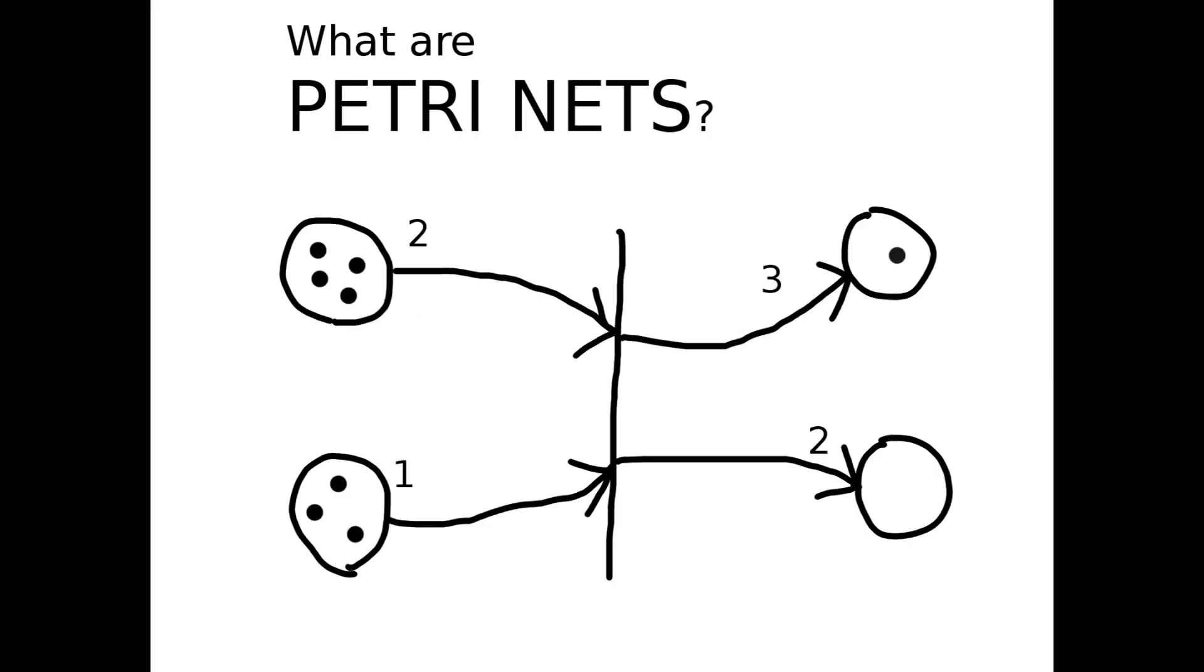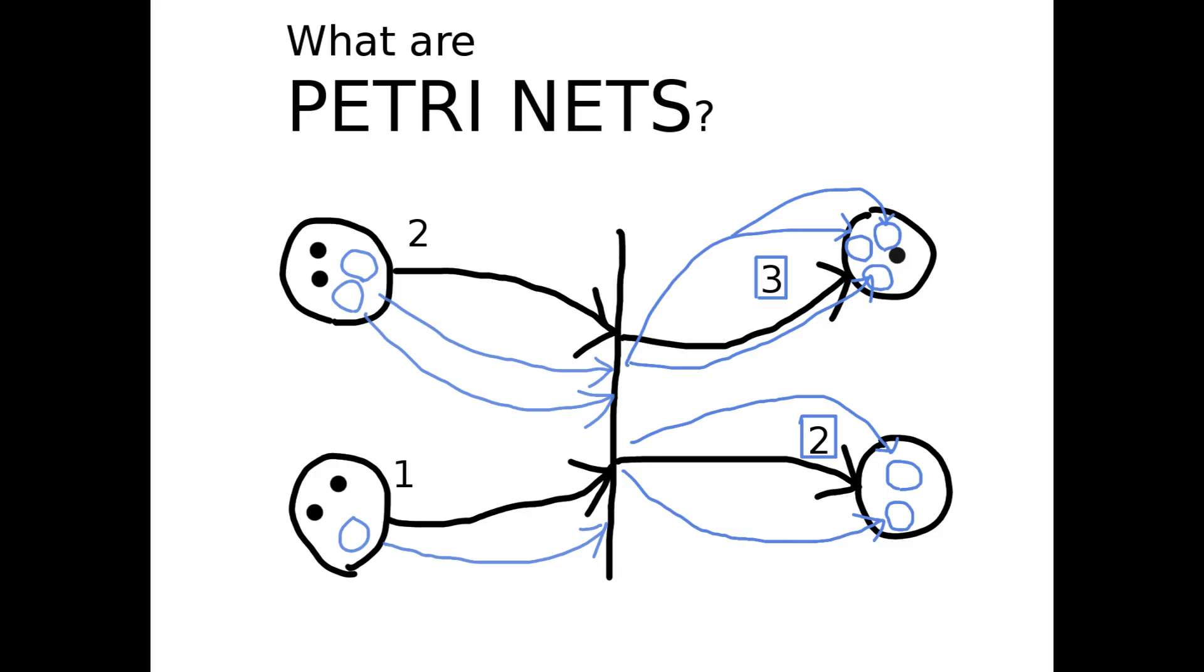There can also be a number on input connections, showing how many tokens must be at the connected place before the transition can fire. And for output connections, numbers show how many tokens it generates.